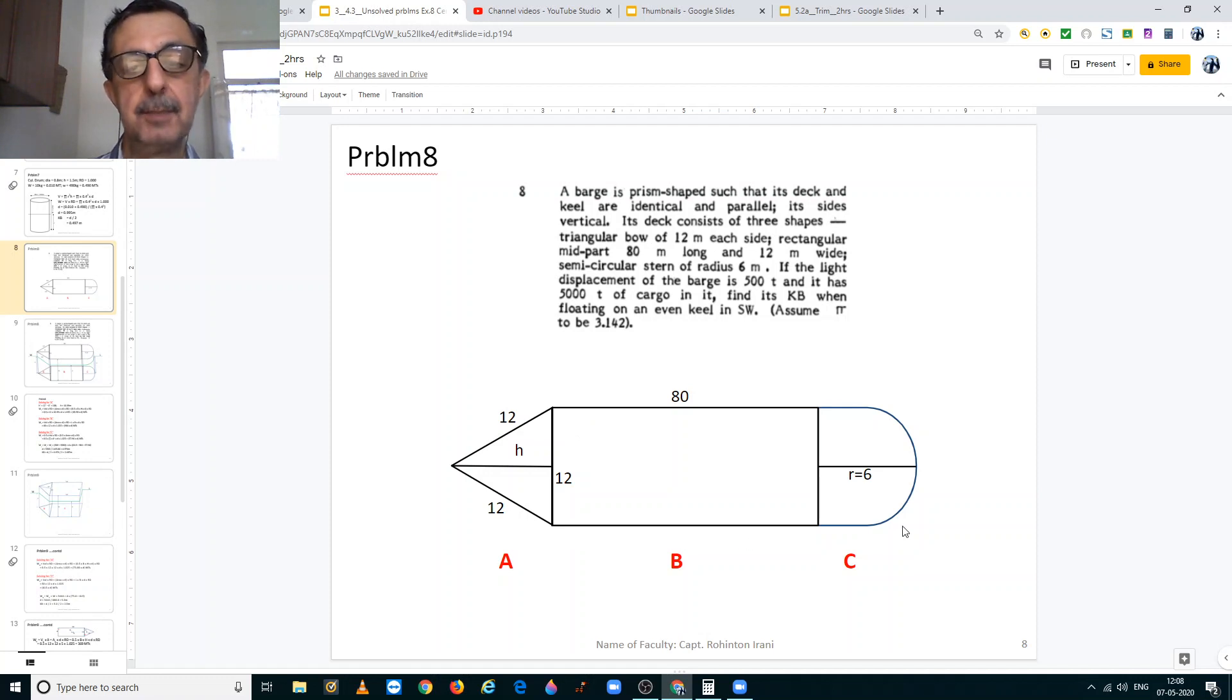And a semicircular stern whose radius is 6 meters. The light displacement of the barge is 500 metric tons and it has 5000 tons of cargo in it. Therefore the total displacement is 500 plus 5000 is equal to 5500 metric tons.